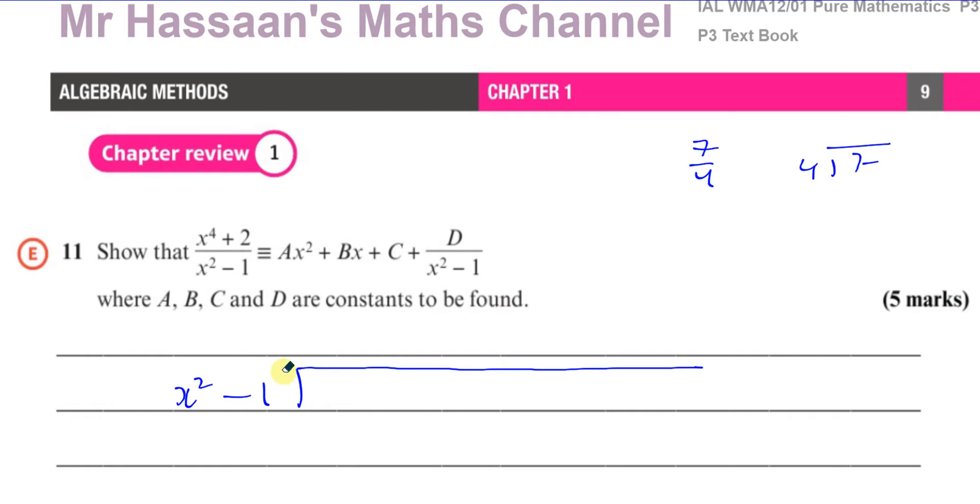Before I proceed, I have to make sure that there's no terms missing. So everything is in the right place in terms of its power. The best way to do that, if there's anything missing between the highest and the lowest term, you fill it in with 0. So x squared plus 0x and then minus 1.